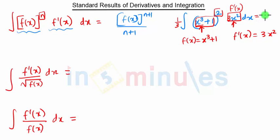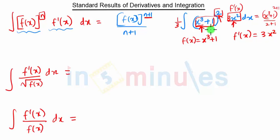Applying the formula, the integration becomes [f(x)]^(n+1) / (n+1) = (x³+1)^3 / 3. This is how you can solve any complex integration by converting it into this standard format and applying the direct formula.